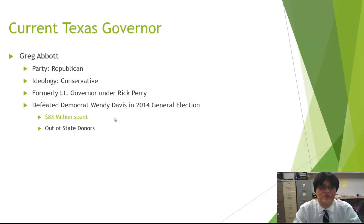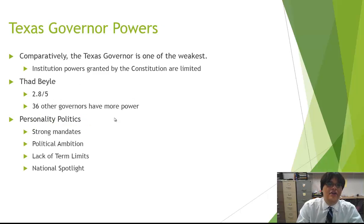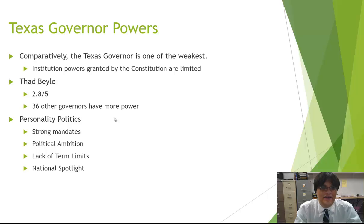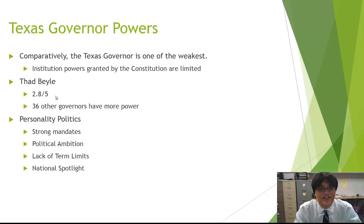Moving on, let's talk about the Texas governor's powers. The Texas governor is comparatively one of the weakest governors in the nation. Your textbook references Thad Bell, who created a five-point scale rating gubernatorial strength, and he gave Texas a rating of 2.8. Thirty-six other governors have more power than the Texas governor. The way the Texas government is structured is inherently stacked against the governor getting too much power — a lot of power lies with the legislative branch and the bureaucratic agencies of Texas.